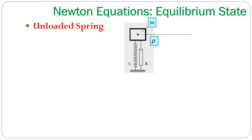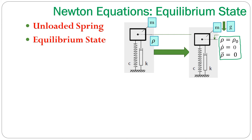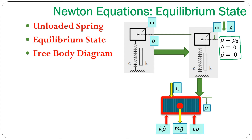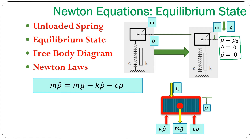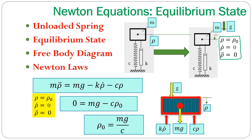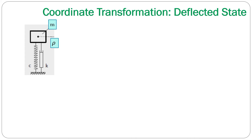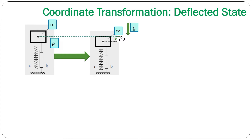Now we are looking at the static state of equilibrium. The coordinate Rho has a certain value called Rho zero. Since we are talking about a static state of equilibrium, Rho dot and Rho double dot are equal to zero. Looking at the free body diagram for the static state of equilibrium, we get the equation that allows us to solve for Rho zero — which is exactly the deformation seen in the system. We find that Rho zero equals M times G (the gravitational force) divided by the spring constant C, or equivalently Rho zero times C equals M times G.